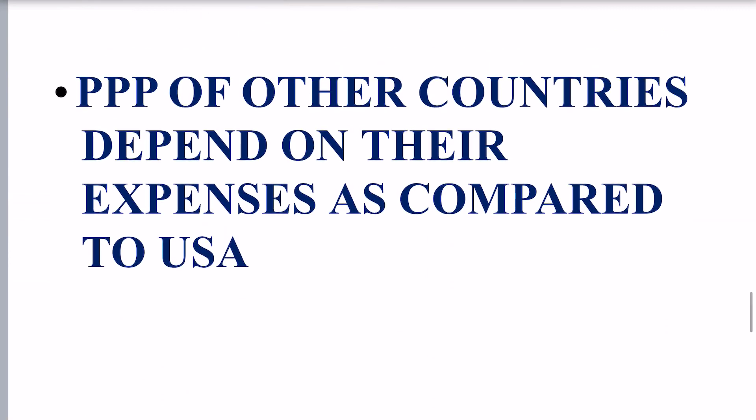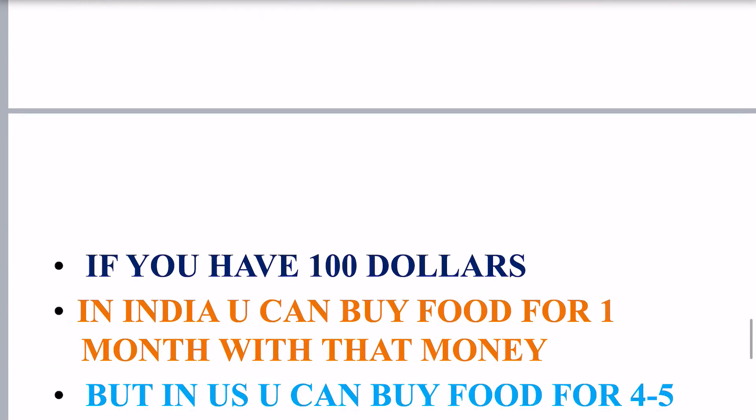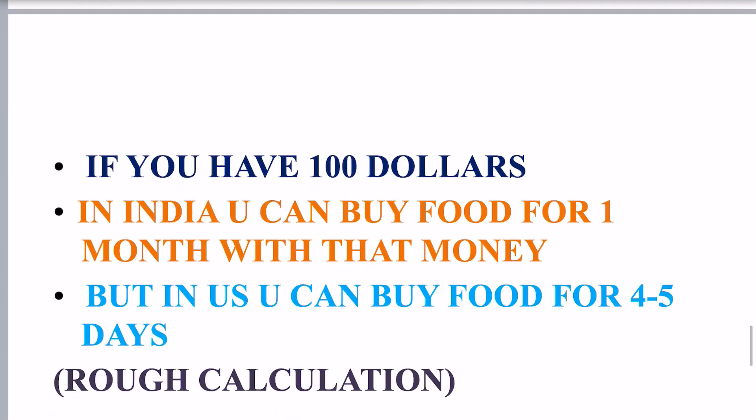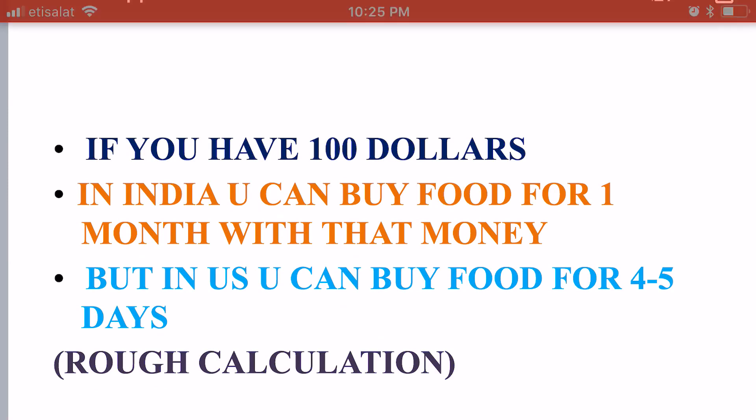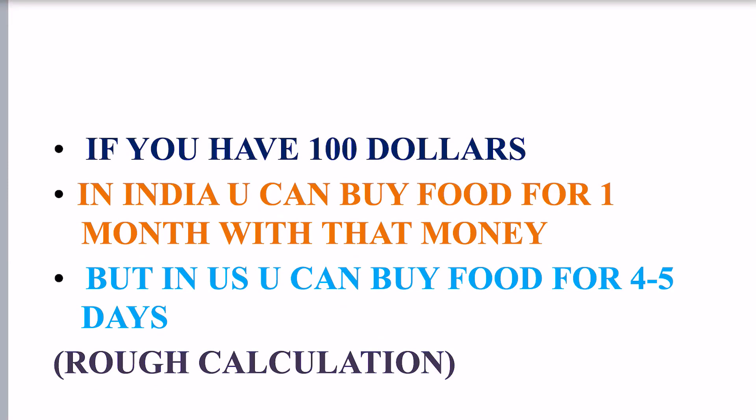The PPP of other countries depends on their expenses as compared to the USA. For example, if you have $100 and you live in India, with that $100 you can buy food for one month. With that same money in the US, you can buy food for only 4 to 5 days. So in India, the expenses are quite cheap compared to the USA.